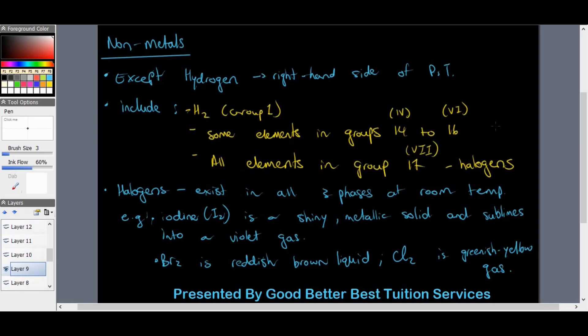Halogens exist in all three phases at room temperature. Halogens being fluorine, chlorine, bromine, and iodine are some examples. They exist in all three phases: solid, liquid, and gas. Iodine is a shiny metallic solid and sublimes into a violet gas, bromine Br2 is reddish brown liquid, and chlorine is a greenish yellow gas.